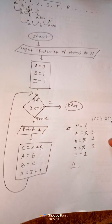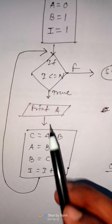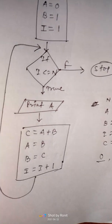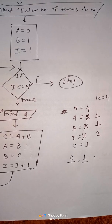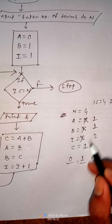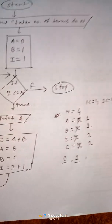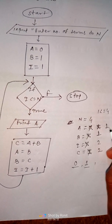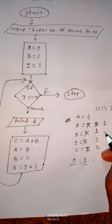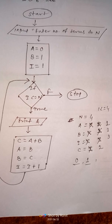Second loop: i=2 ≤ 4 — true, so print a=1. Then c = a+b = 1+1 = 2. Now a becomes b=1, b becomes c=2, and i becomes 3.